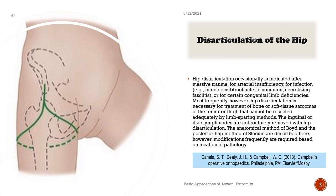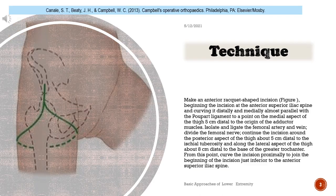Most frequently, however, hip disarticulation is necessary for treatment of bone or soft tissue sarcomas of the femur or thigh that cannot be resected adequately by limb-sparing methods. The inguinal or iliac lymph nodes are not routinely removed with hip disarticulation. The anatomical method of Boyd and the posterior flap method of Slocum are described here; however, modifications frequently are required based on location of pathology.